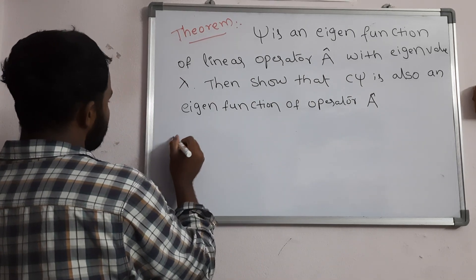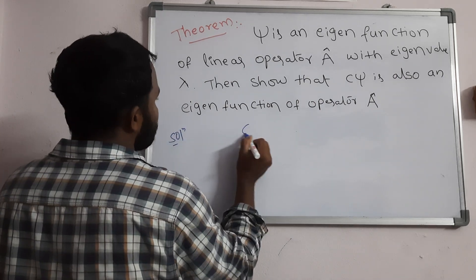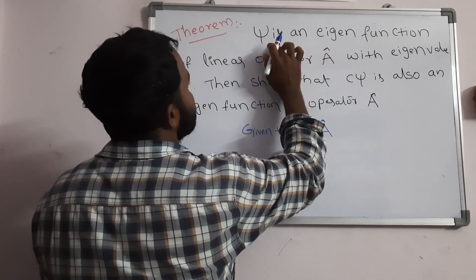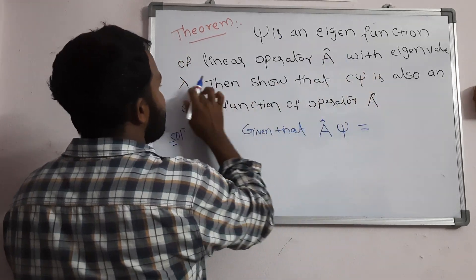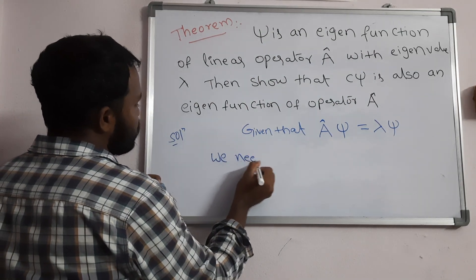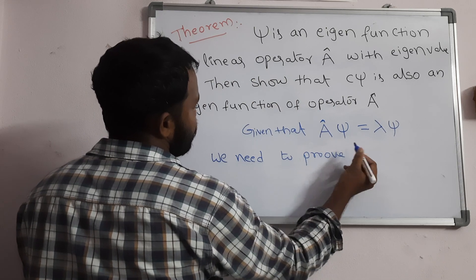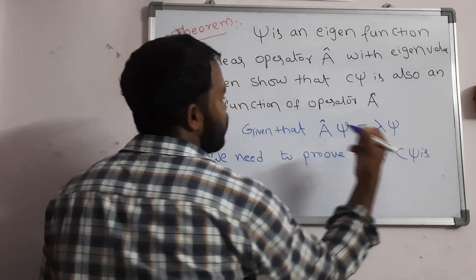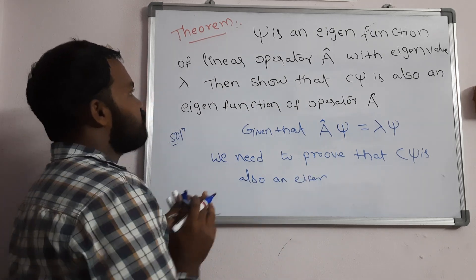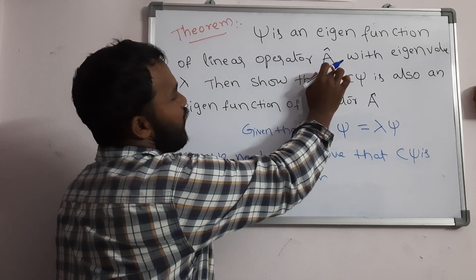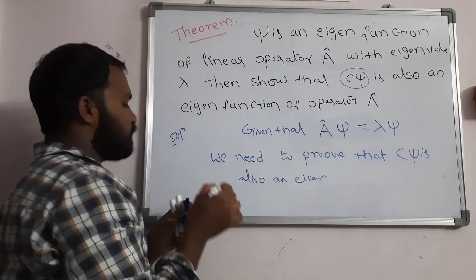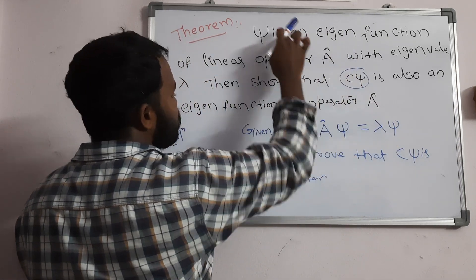Now we will prove this. Given that A-cap is an operator, psi is the function, and the eigenvalue is lambda — so A-cap into psi equals lambda into psi. Psi is the eigenfunction, A-cap is the operator, and lambda is the eigenvalue.